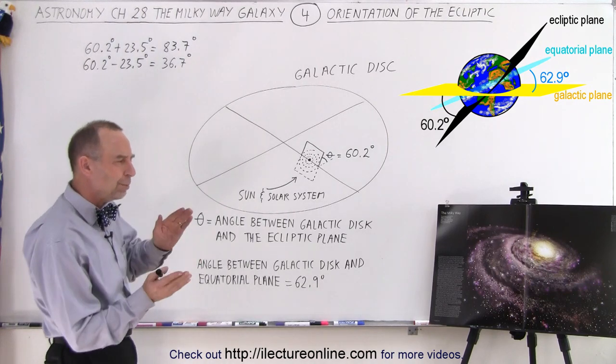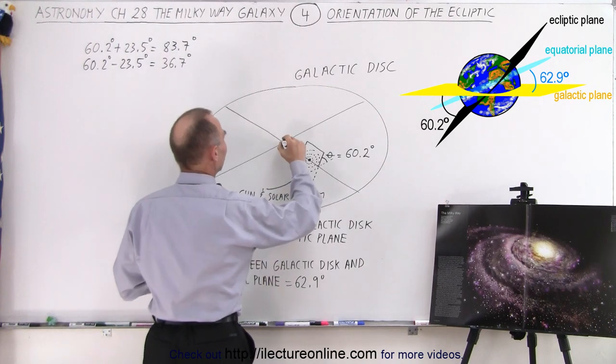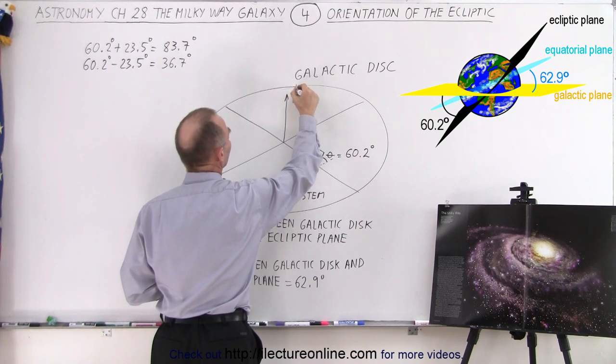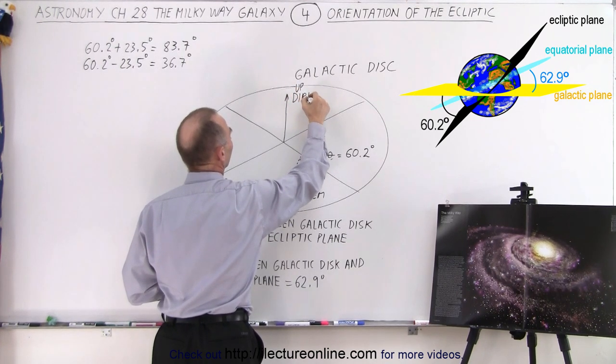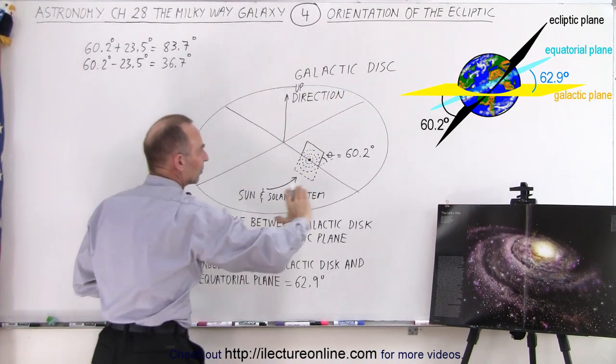Now what would be the orientation of the ecliptic? Well let's try to indicate that here. So let's say that this line right here is the direction to north, the up direction of our galactic disk. You can see that this would be the plane of the galactic disk.